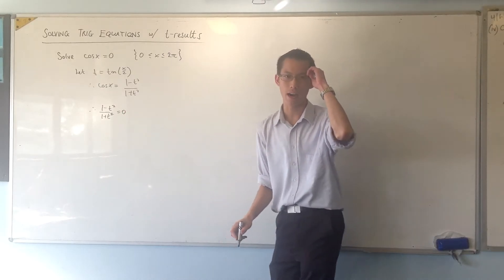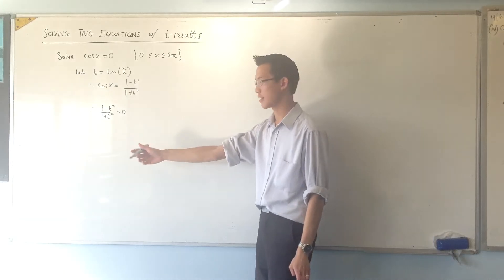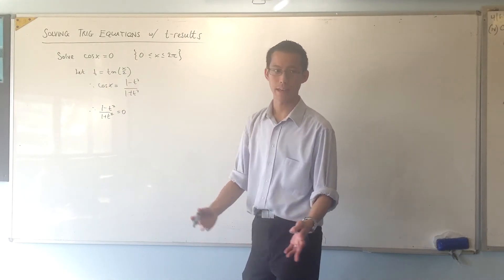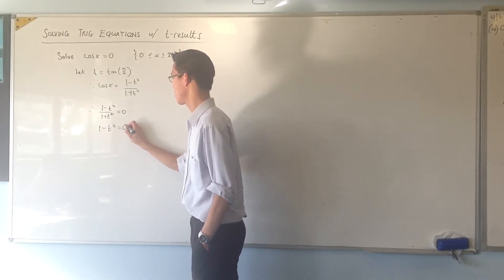Now, you can see in this case I can disregard the denominator. Because there's no value that the denominator can take that makes the whole thing 0. So another way of thinking about that is I can just multiply through by 1 plus T squared, and I'll get this.